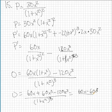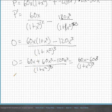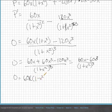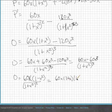And then factoring out 60x, it's going to be one minus x squared over one plus x squared cubed. Then you can factor that out one more time: 60x times one plus x times one minus x.